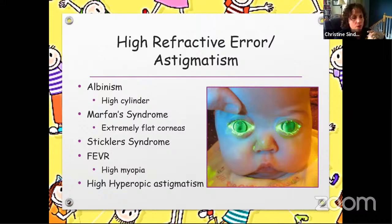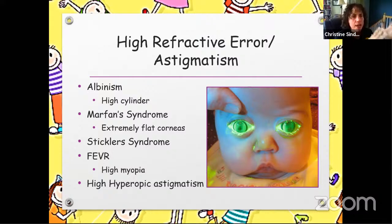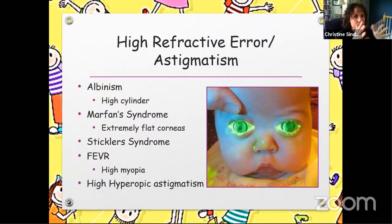With high refractive errors — children with albinism will always have three to four diopters of astigmatism. You either need to correct that fully in glasses, or if they have nystagmus, put them in contact lenses because it will slow the nystagmus down. But then you're going to have to deal with the astigmatism on their cornea.